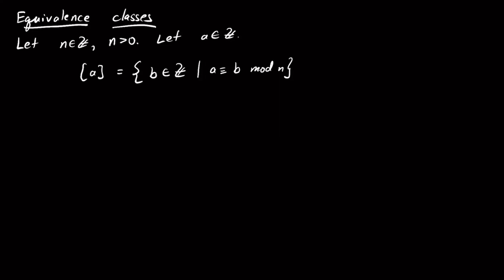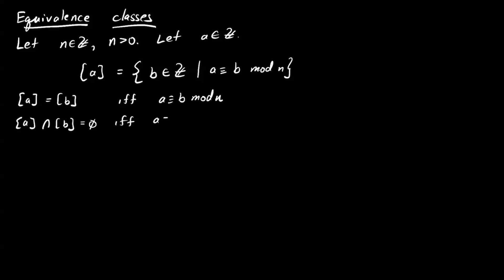So we're ready to define equivalence classes. We'll fix n positive and let a be an integer. The equivalence class of a is all the integers b that are congruent to a modulo n. The equivalence class of a is the same as the equivalence class of b if and only if a is congruent to b modulo n. We also know that the equivalence class of a intersect the equivalence class of b equals the empty set if and only if a is not congruent to b modulo n. Finally, the integers can be written as the union of these equivalence classes.